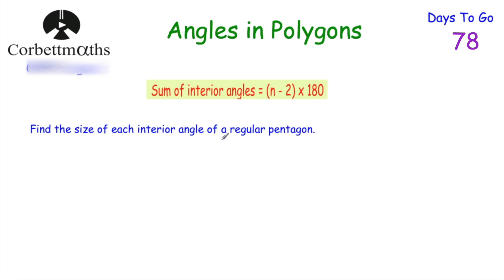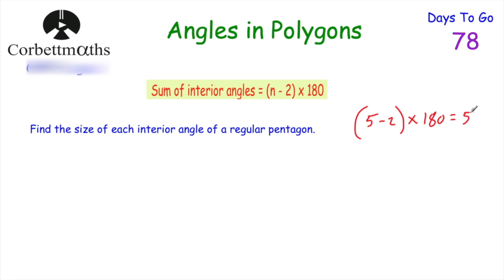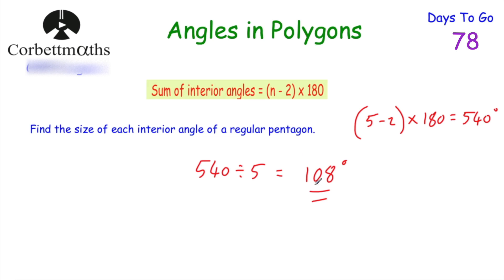Find the size of each interior angle of a regular pentagon. Because it's regular, all angles are the same size. The interior angles of a pentagon add up to 540 degrees — either because a quadrilateral is 360 and we add 180, or using the formula: (5 − 2) × 180 = 3 × 180 = 540 degrees. Now we divide by 5: 540 ÷ 5 = 108 degrees. So each interior angle of a regular pentagon is 108 degrees.